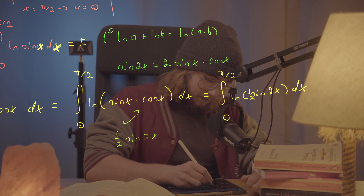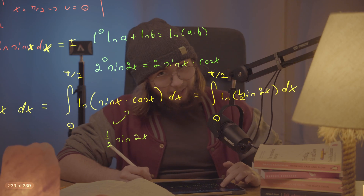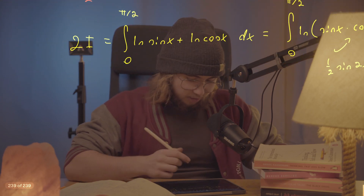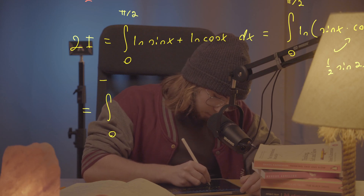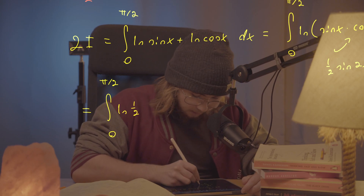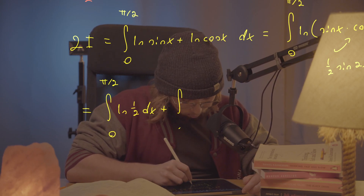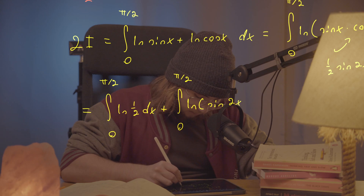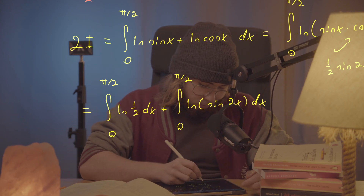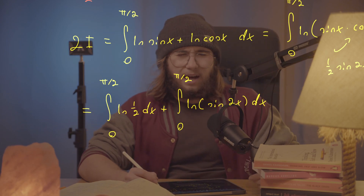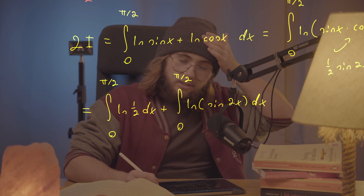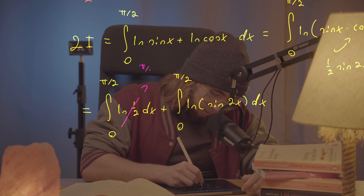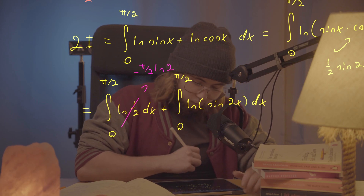So how do I proceed further? I'd like to leverage the logarithm property again to split this integrand into two separate integrals. So I'm going to get the integral from 0 to π/2 of the natural log of (1/2) dx, plus the integral from 0 to π/2 of the natural log of sine of 2x dx. The first one is just natural log of (1/2), which equals negative ln 2, times x evaluated from 0 to π/2. That gives negative π/2 times ln 2.